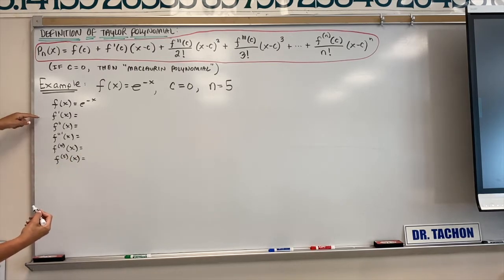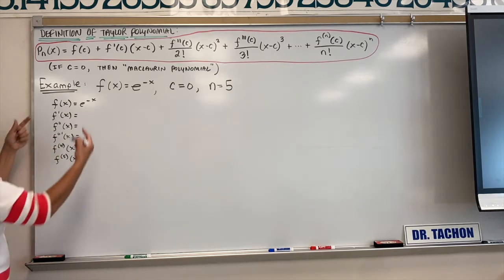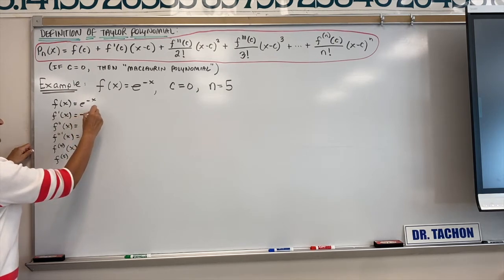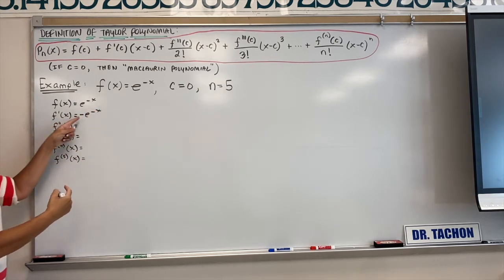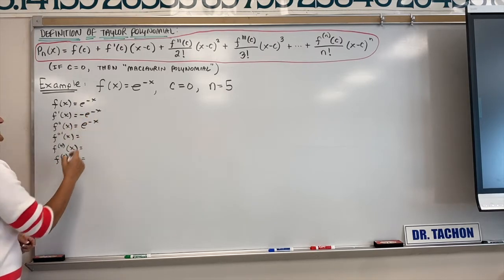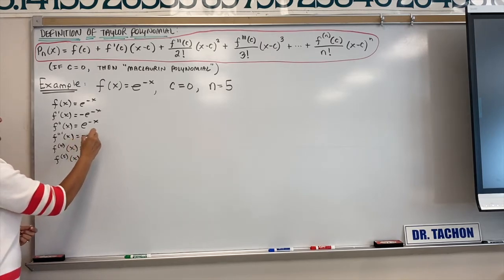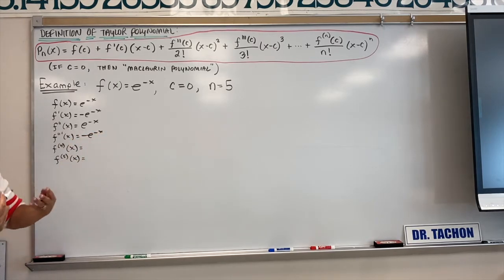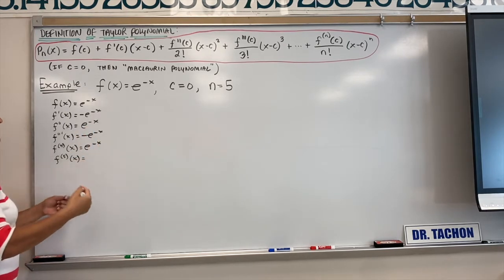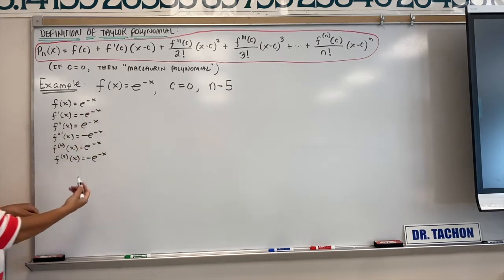Our function is e to the negative x. The first derivative: bring e to the negative x down times the derivative of the exponent, giving negative e to the negative x. Second derivative: negative e to the negative x times negative 1, bringing you back to e to the negative x. Third derivative: negative e to the negative x. Fourth derivative: back to e to the negative x. Fifth derivative: e to the negative x times negative 1, so negative e to the negative x.